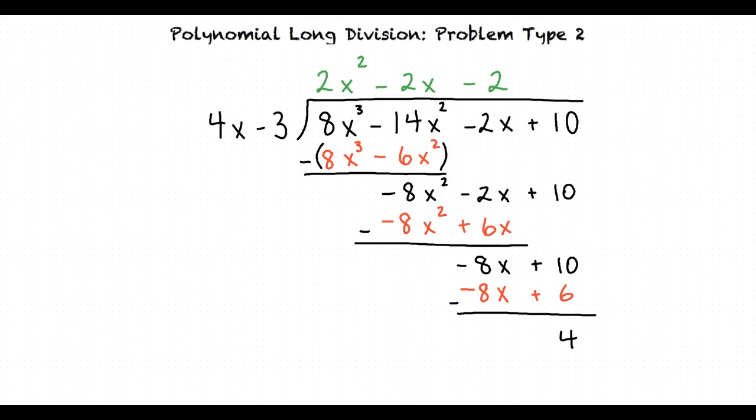The quotient and our final answer is 2x squared minus 2x minus 2 with the remainder of 4.